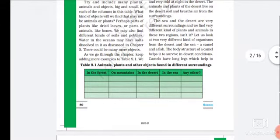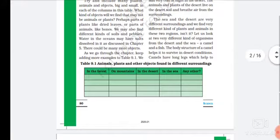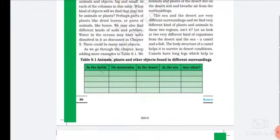The sea and desert are very different surroundings, and we find very different kinds of plants and animals in these two regions. Let us look at two very different kinds of organisms from the desert and the sea: a camel and a fish.